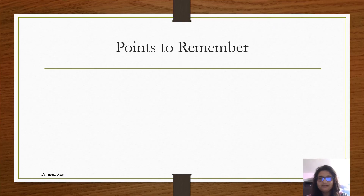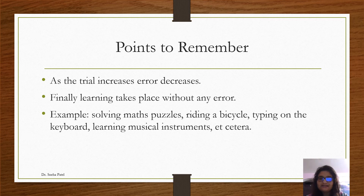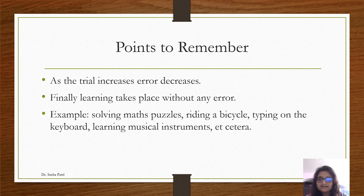Here are some points to remember. As the trial increases, error decreases. Finally, learning takes place without any error. Examples include solving maths puzzles, riding a bicycle, typing on the keyboard, learning musical instruments, etc. When learning takes place through trial and error, that learning would be very accurate, as it is said that practice makes a person perfect. When we are faced with a task, initially it may seem very difficult. But without getting demotivated or being negative, if we keep on trying to perform that task, finally through practice, we would be accurate in performing that task.